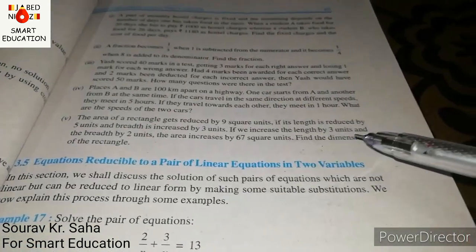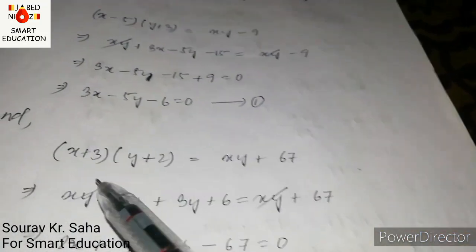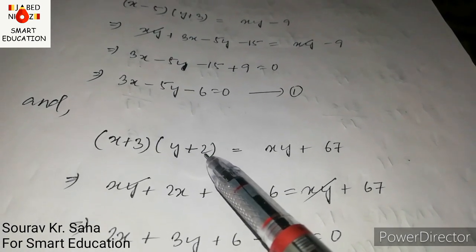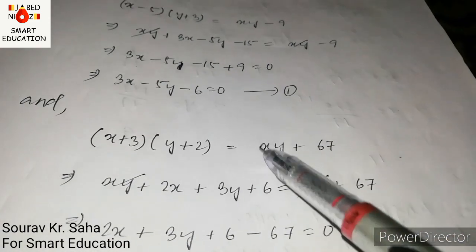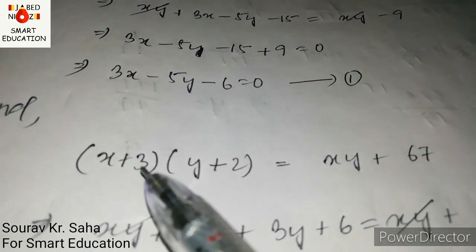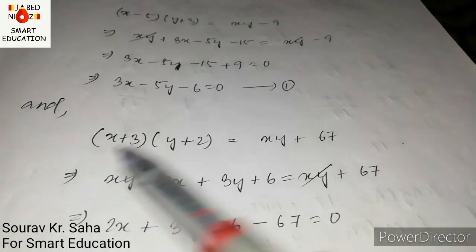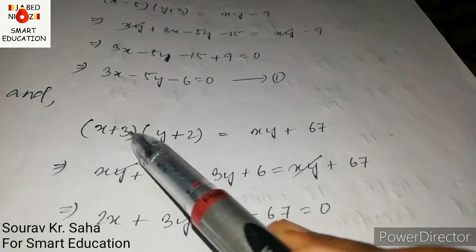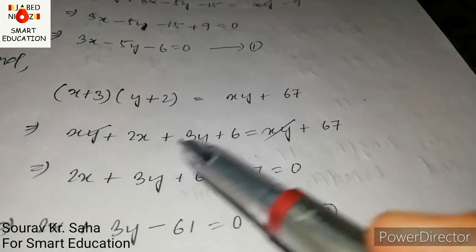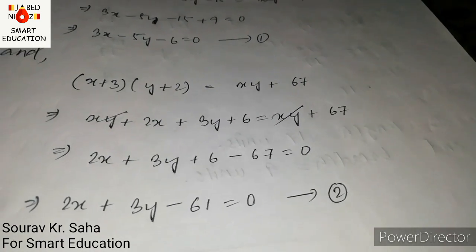For the second condition: length increased by 3 and breadth increased by 2 gives area increased by 67. So (x + 3)(y + 2) = xy + 67. Expanding: xy + 2x + 3y + 6 = xy + 67. Cancelling xy: 2x + 3y + 6 − 67 = 0, giving 2x plus 3y minus 61 equal to 0. This is equation two.